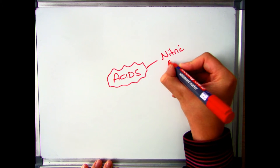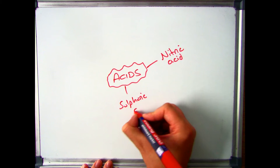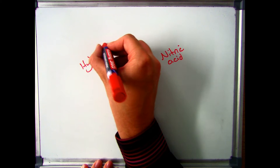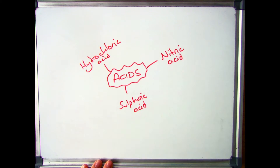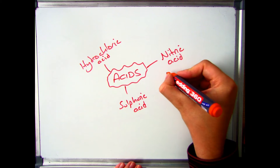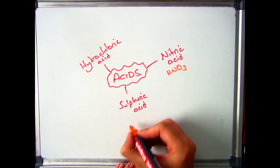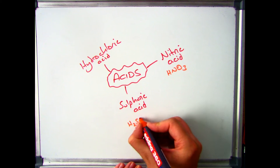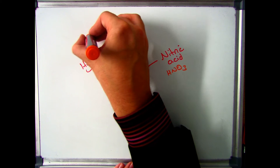If we look at the three main acids that you need to know for the exam — nitric acid, sulfuric acid, and hydrochloric acid — and in particular if we look at the actual chemical formulas: nitric acid is HNO3, sulfuric acid is H2SO4, and hydrochloric acid is HCl.